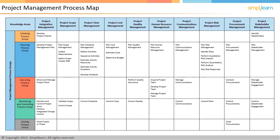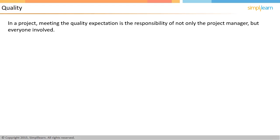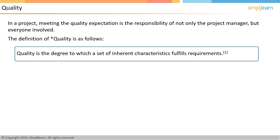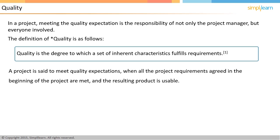In the next screen, let us understand what quality is. The project manager is responsible for quality in a project. However, it is also the responsibility of each and every one in the project to ensure that whatever they do meets project quality expectations. Quality is defined as the degree to which a set of inherent characteristics fulfills requirements. A project is said to meet quality expectations when all the project requirements agreed in the beginning of the project are met and the resulting product is usable. Usable means that the intended users can use the product without any problem.